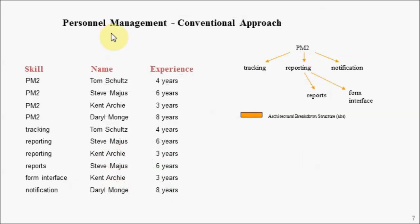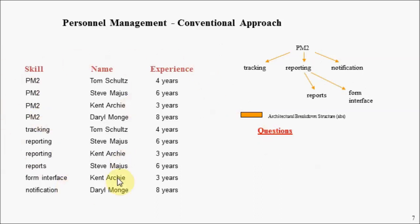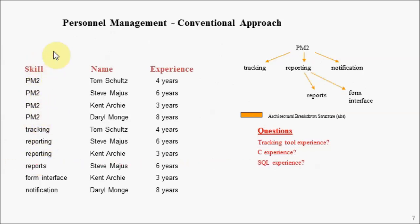Let's look at a conventional approach to personnel management — specifically an application dealing with a skills database. Imagine your company developed a project tracking system broken down into sub-components, with different people working on different sub-components. One thing you want to do in a skills database is find the right people for the right job. Here we have a database table of skills. You might want to find someone with tracking tool experience, or C experience, or Java experience. Notice that C and SQL don't show up in the skills column, so we would not be able to find anyone with that experience. Ingress — a type of relational database — doesn't show up either. Asking for database experience in general, or project management tool experience in general, also doesn't work.